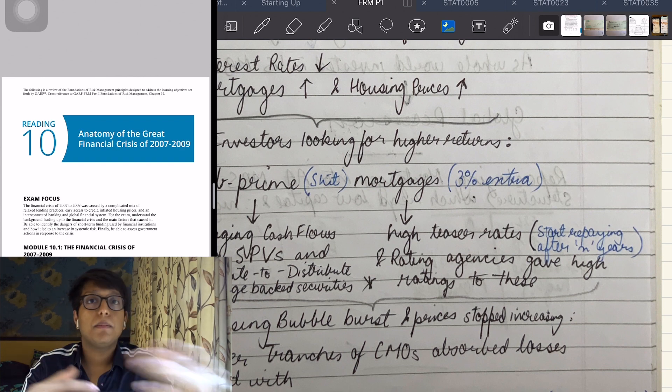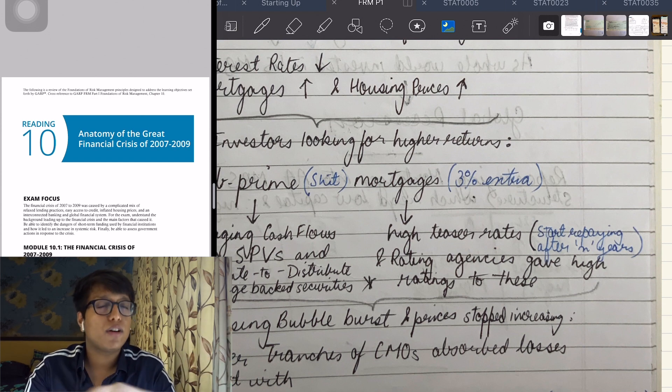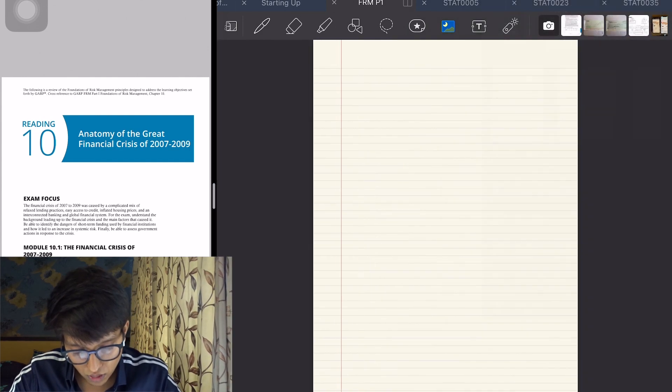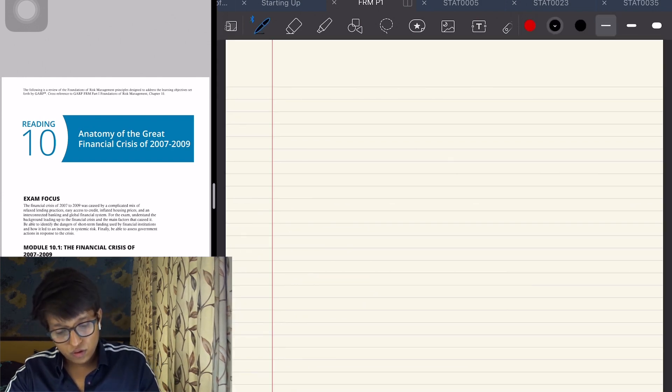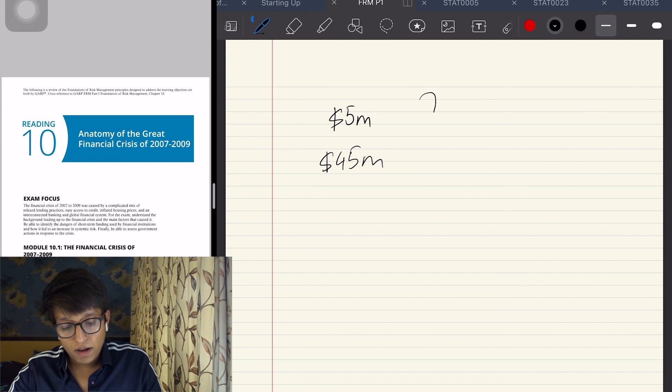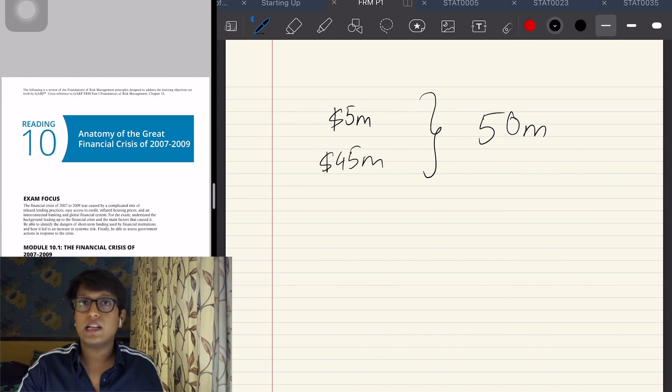You can start paying your mortgages after X years, after two years let's say. So technically for the first two years your housing price is free. Let me add a page and explain it to you. You invest five million dollars yourself, you take a forty-five million dollar mortgage, and you buy a house worth fifty million.